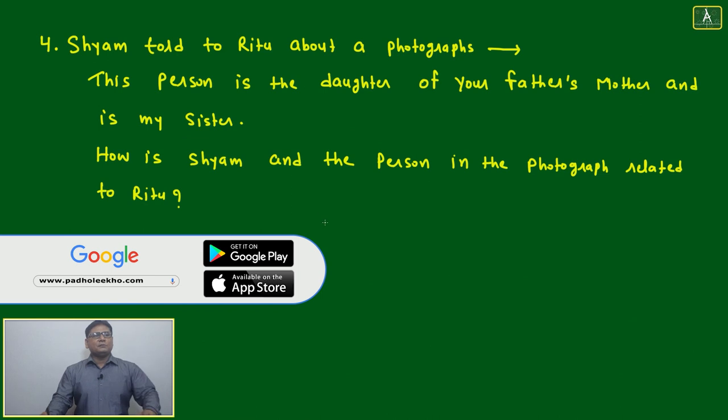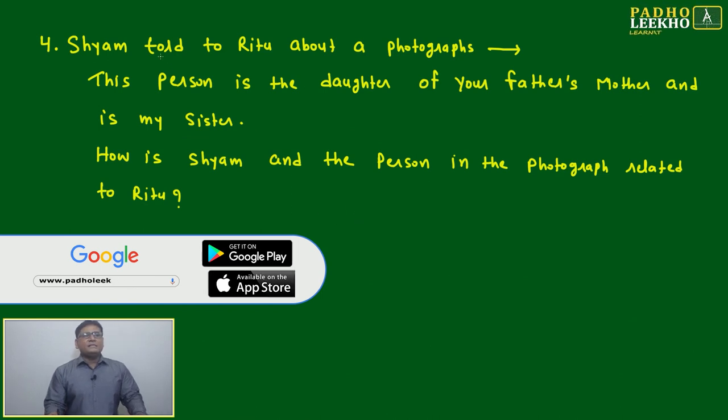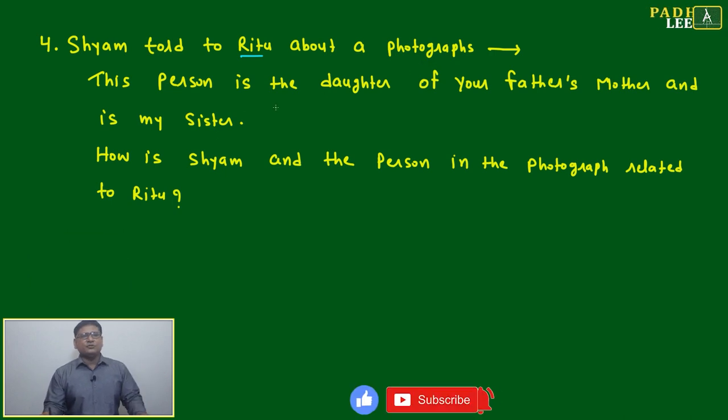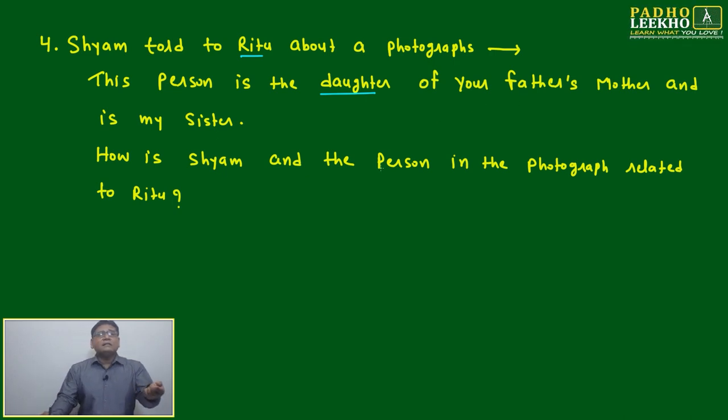Next question - it will be a little interesting. Shyam told to Ritu about a photograph. This is your type 1 question. Shyam is telling by seeing one photograph to Ritu: this person is the daughter of your father's mother and is my sister.